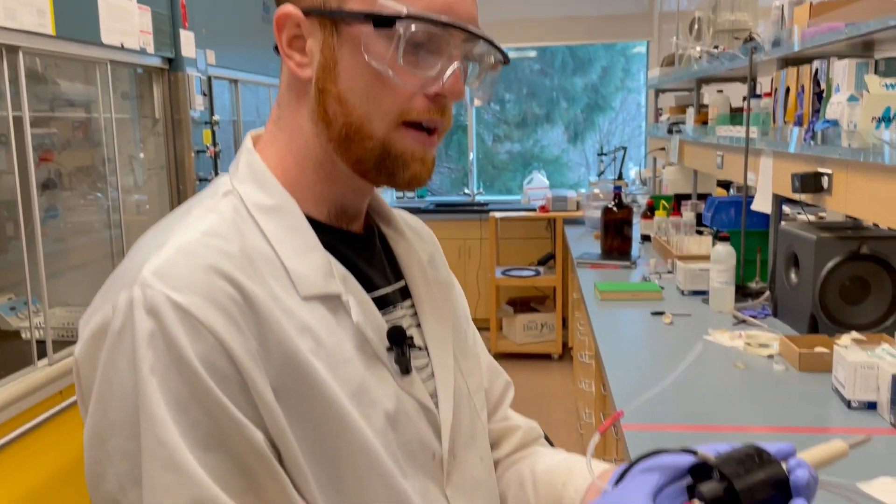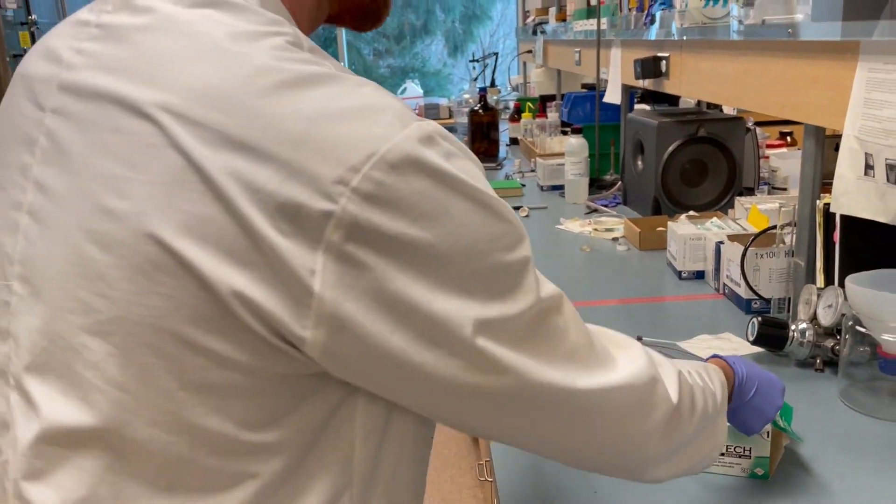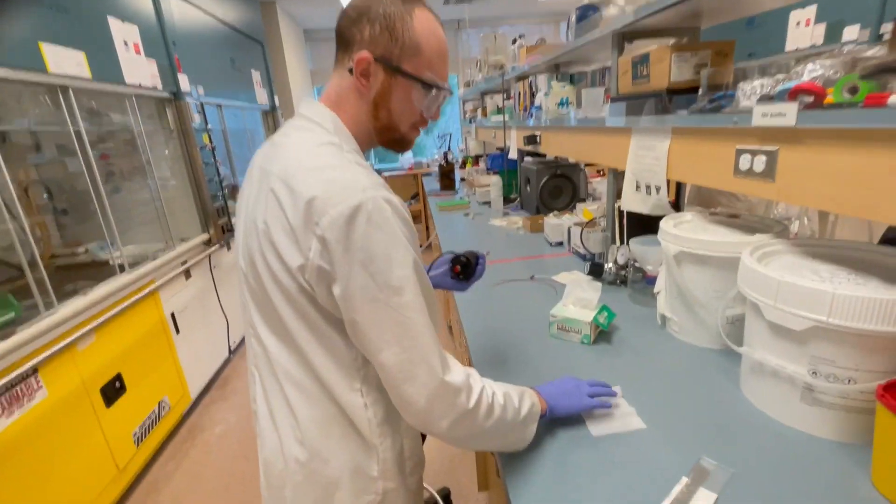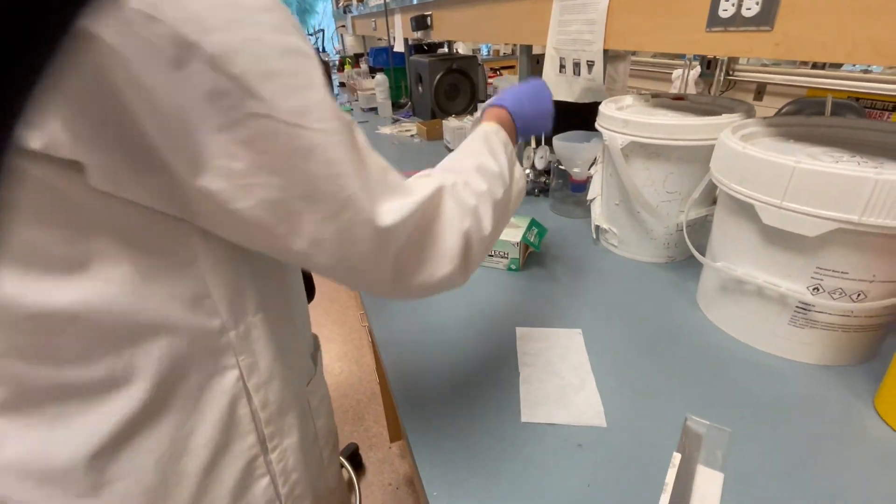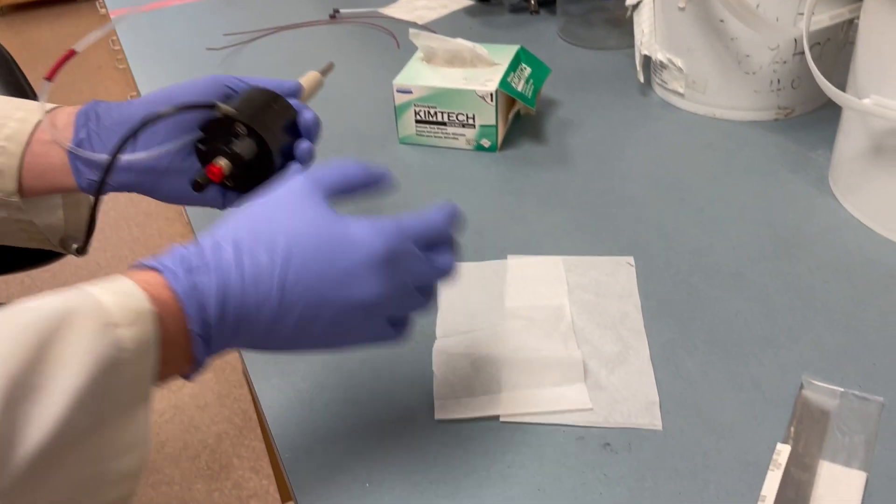Before we put the source down anywhere we want to put out a little blanket of kim wipes. I've cleaned this surface but we really just want to make sure that it's not going to touch anything else.